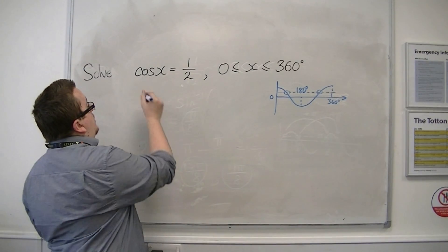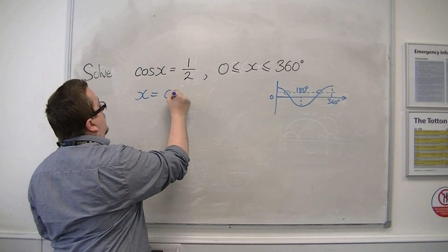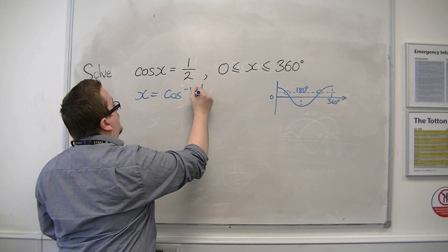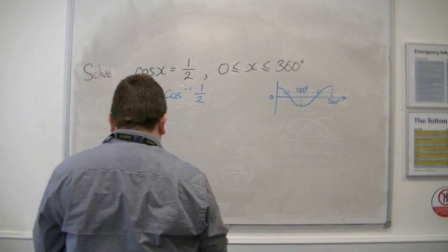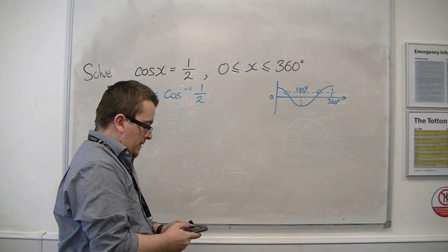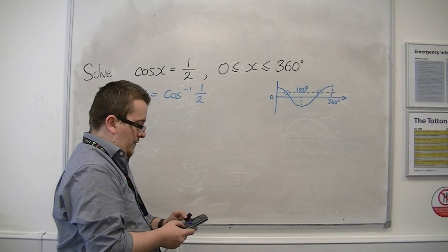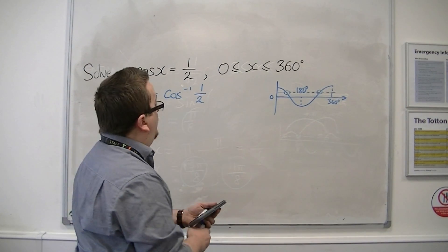The first solution can be found by inverse cosine of 1 half. Make sure your calculator is in degrees, which mine isn't. So inverse cos of 1 half gets you 60 degrees.